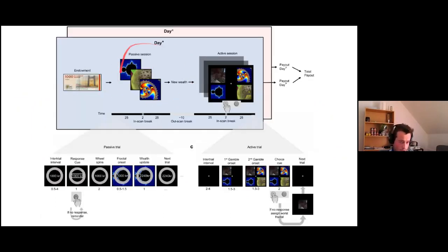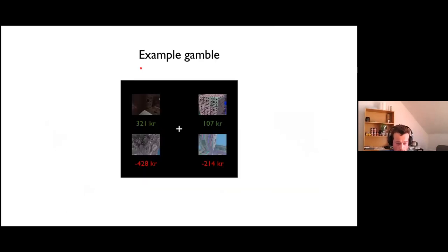Each fractal meant a different wealth change. So after applying this fractal, a subject gained 428 crowns. In the multiplicative day, wealth changed multiplicatively. We again had nine different fractals, each corresponding to different wealth change. After getting the best fractal, your wealth gets multiplied by the factor of 2.23. By getting the worst possible fractal in this day, you lose more than 50 percent of your wealth.